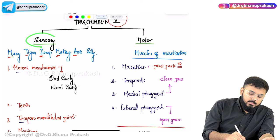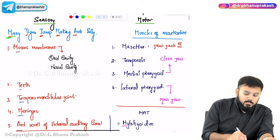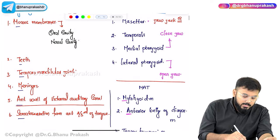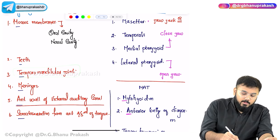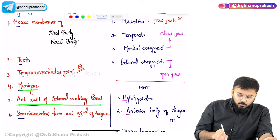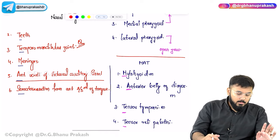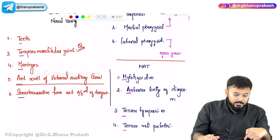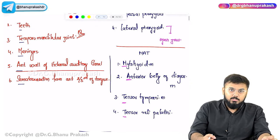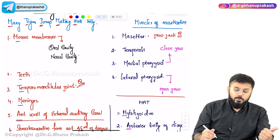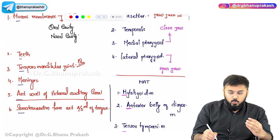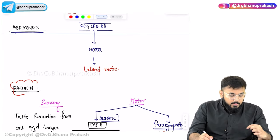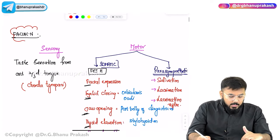Recap continued: CN V (trigeminal) — sensory: many tigers jump making ants silly (mucous membranes, teeth, TMJ, meninges, anterior wall EAC, somatosensation anterior 2/3 tongue); motor: muscles of mastication (masseter for jaw jerk, medial pterygoid closes jaw, lateral pterygoid opens jaw) plus MATT muscles (mylohyoid, anterior belly digastric, tensor tympani, tensor veli palatini). CN VI (abducens) — lateral rectus only.